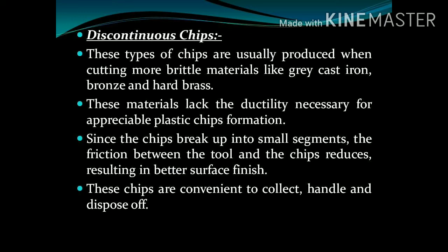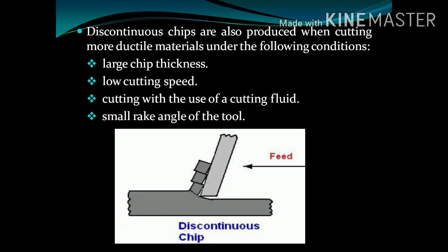Moving on to the next, that is discontinuous chips. These types of chips are usually formed in ductile material. Since the chip breaks in small segments, the friction between chip and tool is reduced and better surface finish is obtained. The main advantage is that the chips are easy to dispose of. These chips are obtained under conditions such as large chip thickness, low cutting speed, use of cutting fluid while cutting, and when the rake angle of the tool is very small.